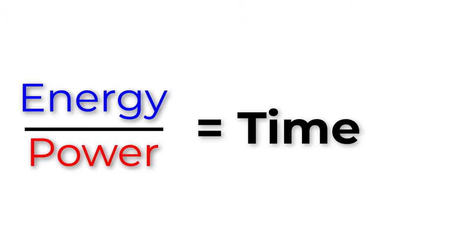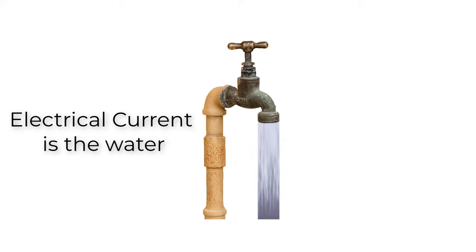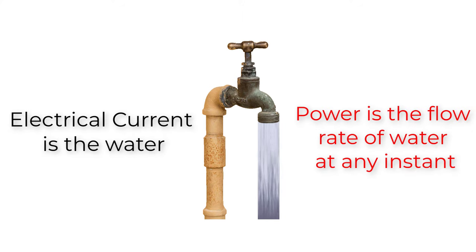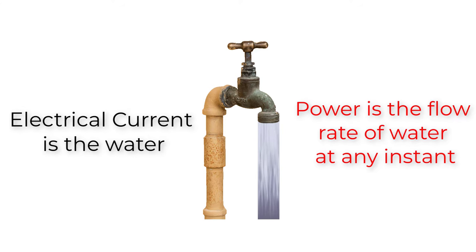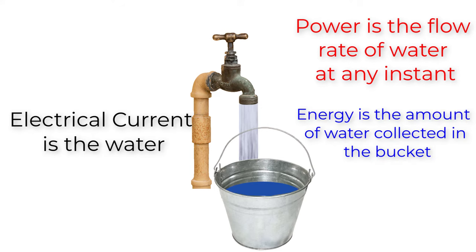The main difference between electrical energy and electrical power is the time factor. If you think of electrical current as water in a water tap, then its power is the flow rate at which the water travels at any instant. If the flow is directed at a bucket, then the amount of water collected in the bucket is the energy. Electrical energy is the accumulation of power over time.